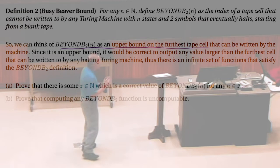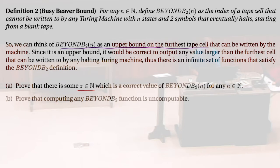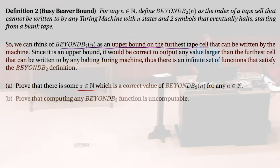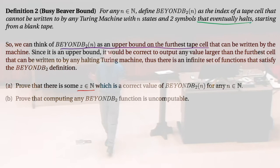Part A: is this well defined? Is there some natural number that is the correct value — or would be a correct value? There could be more than one for this 'beyond B' function that I've defined for any input. If you knew a particular machine, so for any given machine that halts, you could run that machine and look at the furthest tape square that it writes into. There's some natural number that is the number of that tape square, so that must exist.